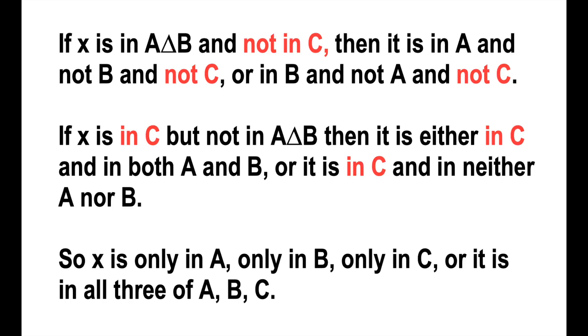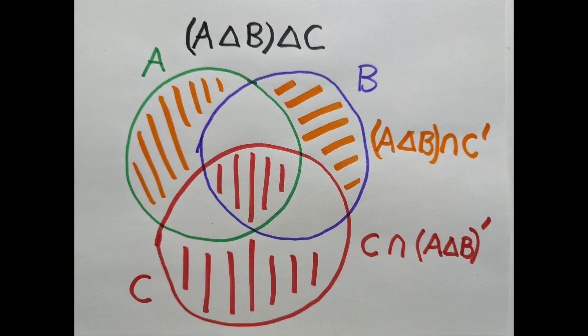If X is in A triangle B and not in C, colored in orange, then it is in A and not B and not C, or in B and not A and not C.